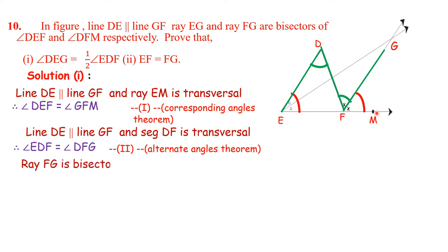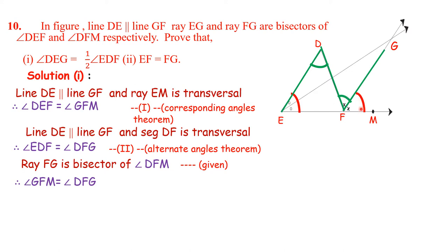Next, ray FG is a bisector of angle DFM — this is given. Therefore, angle GFM is equal to angle DFG. These two angles are equal. Therefore, these two angles are also equal from statements 1, 2, and this third statement.